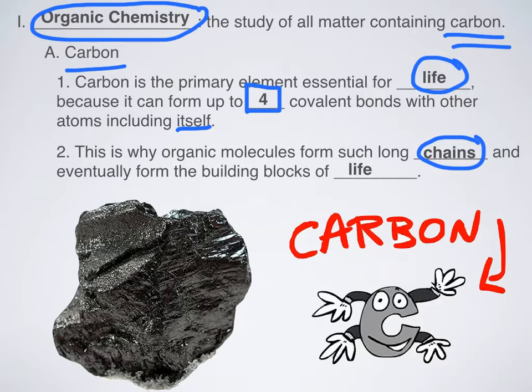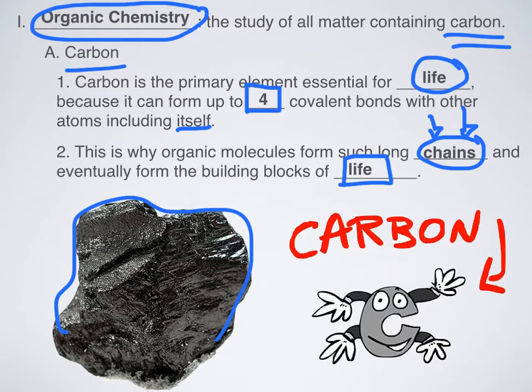Once you have this bonding capability, you end up with these long chains of organic molecules that are the building blocks for life. Even though this is just a big chunk of weird graphite, which is an allotrope of carbon, it actually is something that can be used as a building block of life.